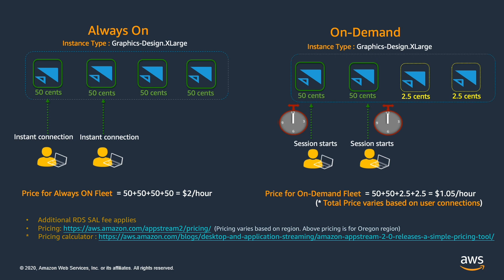The above pricing for this demo is based off the US West 2 Region in Oregon. For more information on pricing, please check out the links on the slide. You can also use our pricing calculator to get an estimate of your monthly bill. I hope you understood the difference between always-on and on-demand fleet types for AppStream 2.0, which will help you make a better choice for your business needs. Thanks for watching, and happy cloud computing from all of us here at AWS.